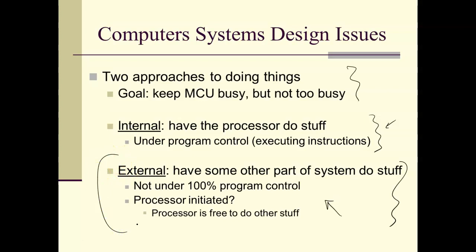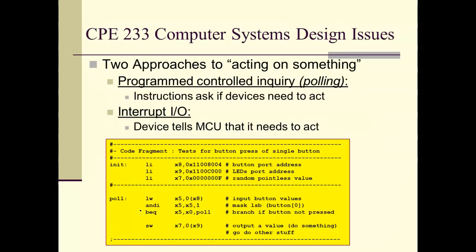The external thing is going to communicate with the microcontroller — generally with the interrupt signal. It's sort of program control, but it's initiated externally. This is a classic polling loop. This piece of code is waiting for a button, constantly stuck in a loop checking to see if someone pressed a button. The only way it breaks out is if someone presses a button. If it's stuck in this loop, it's doing nothing effective. The problem is it can't go out and do other things — this is the problem with a polling loop.